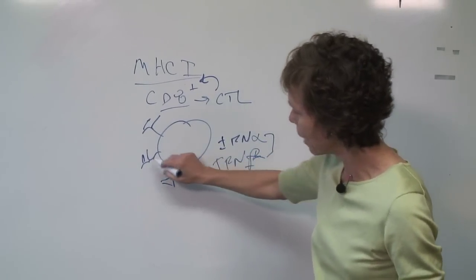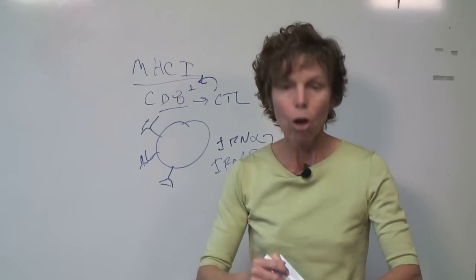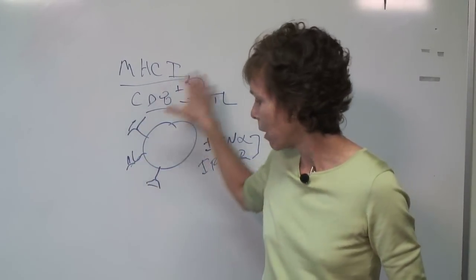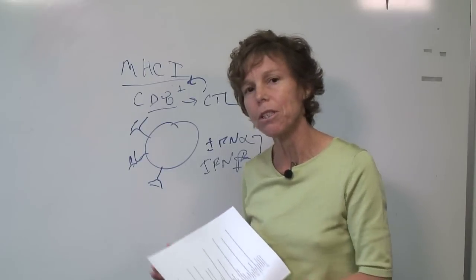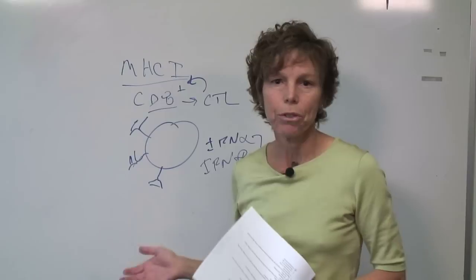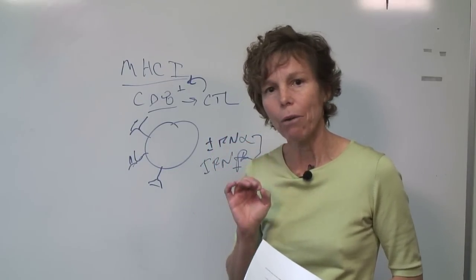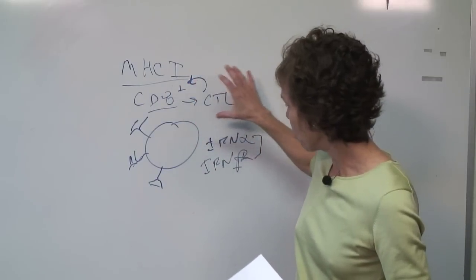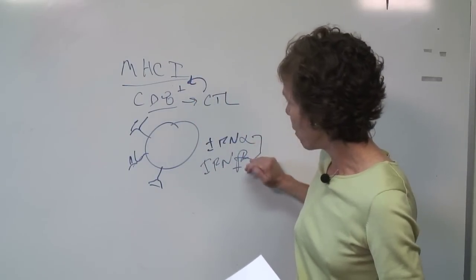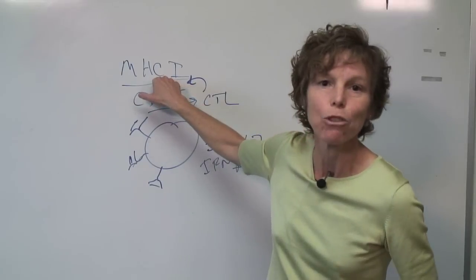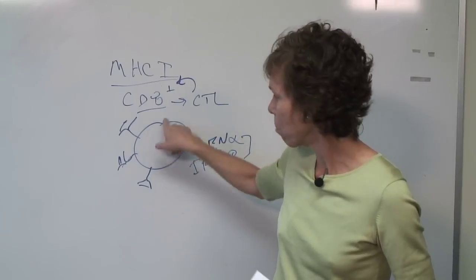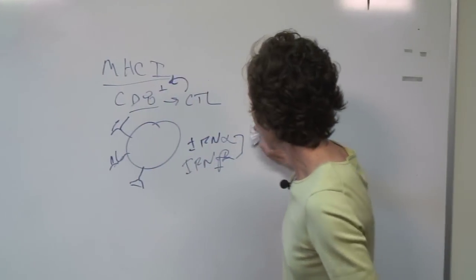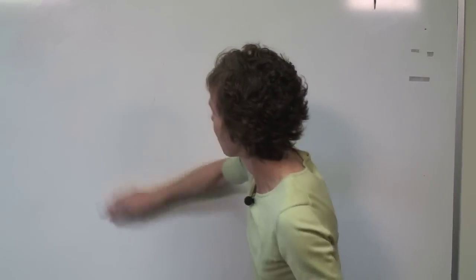Interferon alpha and beta increase the expression of MHC class 1, which enables your body to clear that virus. So when you see questions about how does the body respond to viruses versus bacteria or fungi, it's very important to understand the mechanism of interferon alpha and beta increasing the expression of MHC class 1 in order to eliminate virally infected cells. This CD8 positive cell is cytotoxic and destroys that cell via lysis.